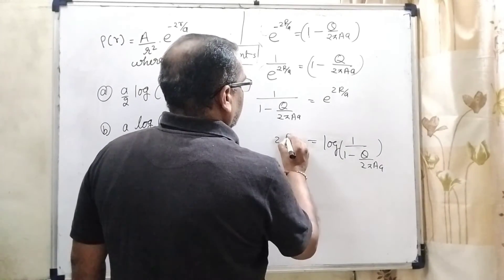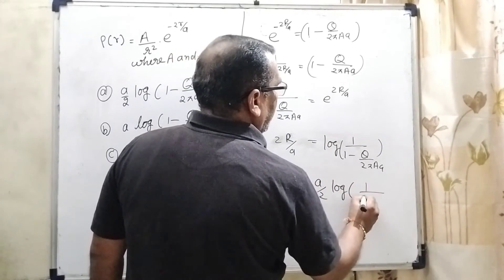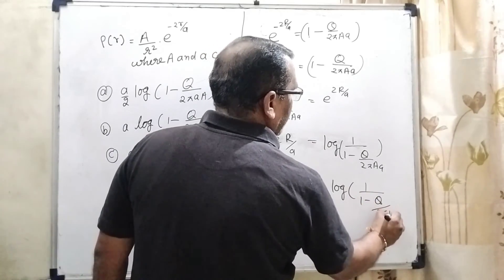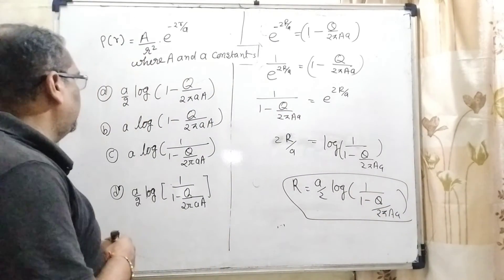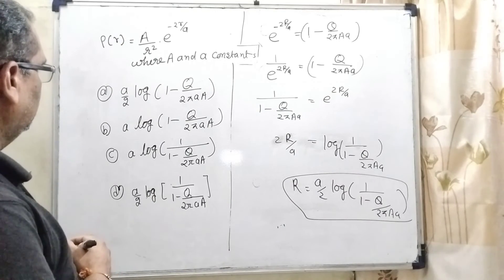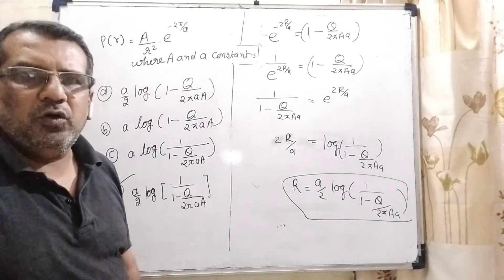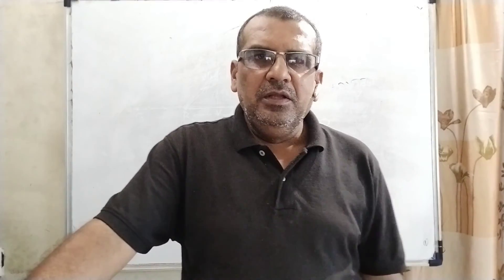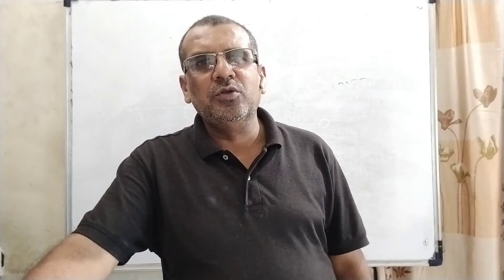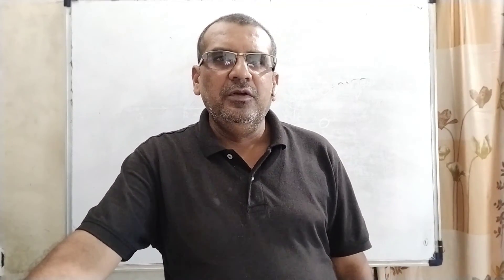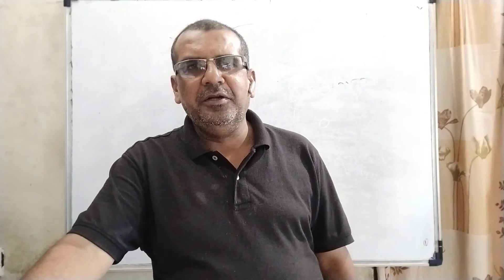Now we find the radius R. Therefore R = (a/2) · log(1 / (1 − Q / 2π·capital A·small a)). Checking which option matches — it matches Option D: (a/2) · log(1 / (1 − Q / 2π·A·a)). Option D is correct. I hope you understood this question. Thank you for staying till the end of this video. Your success is due to your hard work, but if my video helped, I will consider myself lucky. Thank you once again. Take care. Bye bye.